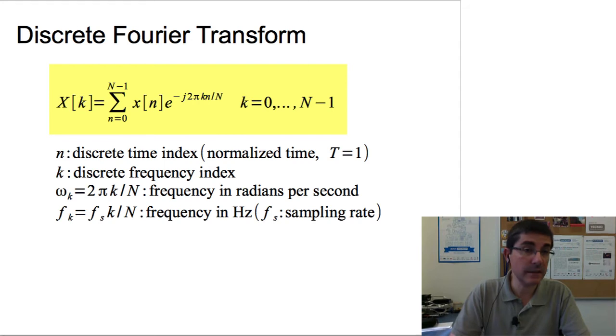So n is our discrete time index, k is our discrete frequency index. And then if we want to understand these frequencies as radian frequencies, we have to multiply k by 2π and divide by N, which is our exponent in the complex exponential. And then if we want to convert this to a frequency in hertz, if we have the k index divided by capital N and we multiply by the sampling rate, we obtain the frequency in hertz.